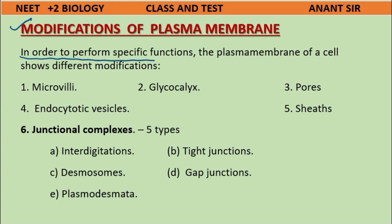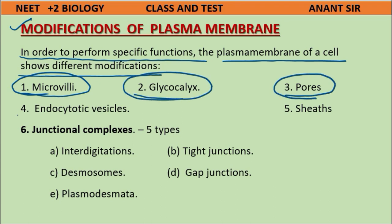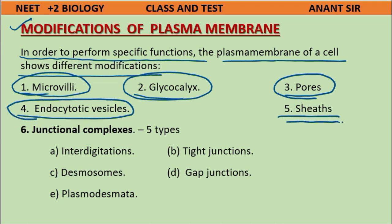In order to perform specific functions, the plasma membrane of cells shows different modifications. These include: (1) microvilli, (2) glycocalyx, (3) pores, (4) endocytotic vesicles, (5) and (6) junctional complexes.